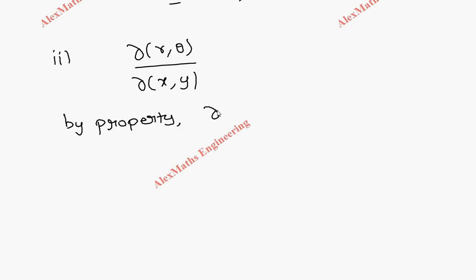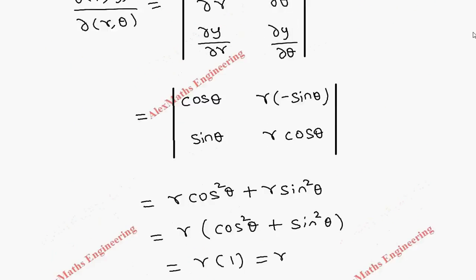The property is: if you have ∂(x,y)/∂(r,θ) multiplied by its reciprocal ∂(r,θ)/∂(x,y), that gives 1. Since in the first subdivision we already got the value of ∂(x,y)/∂(r,θ),